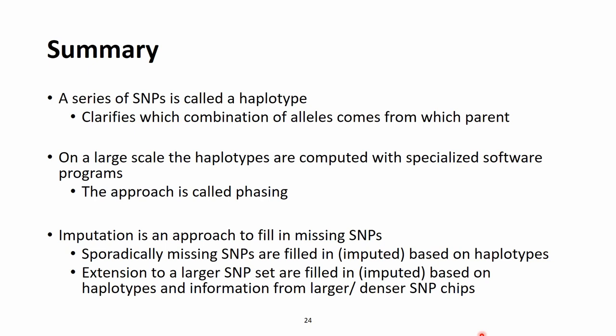We have options to fill in sporadically missing SNPs caused by genotyping errors, or we can extend a smaller SNP chip to a larger one based on haplotypes and information from larger denser SNP chips — potentially saving money in the process since lower density SNP chips cost less. If we are not interested in very specific rare alleles and are fine with imputed genotypes, we can use these for our research. Thank you for your time spent on this video, and please leave any questions or comments below!